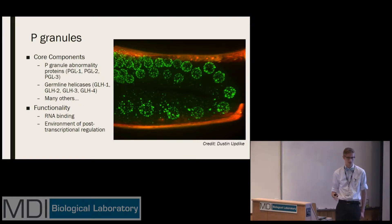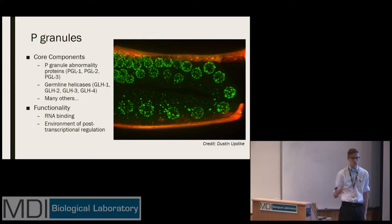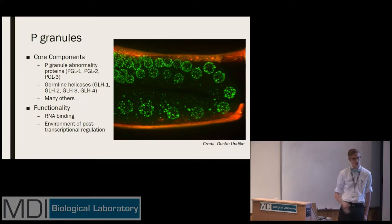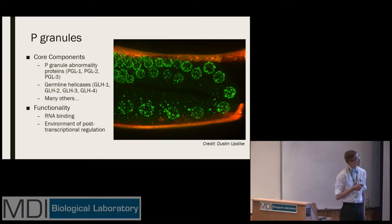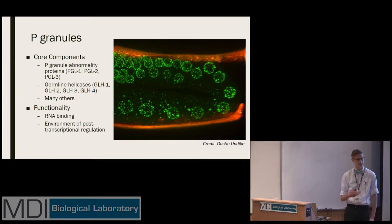More about the components of P granules. They're composed of RNA and protein, but we're going to focus on two main families of proteins: the P granule abnormality proteins, of which there is PGL 1, 2, and 3, and the germ line helicases, GLH 1, 2, 3, and 4. What you can see on the right is a GLH 1 strain of worms labeled with a fluorescent protein so that you can visualize these P granules. Most of the components of P granules are involved in RNA metabolism and RNA binding, so that gives the germ line a way to regulate post-transcriptionally.